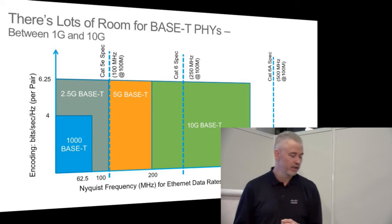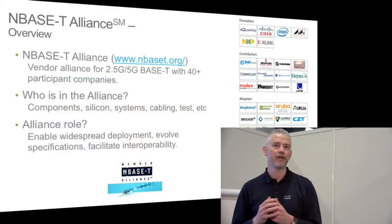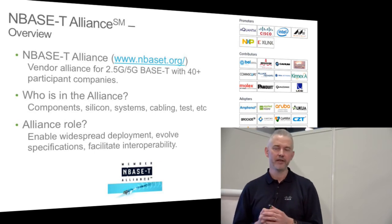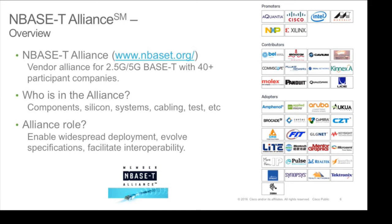Basically, I take the signaling techniques from 10G Base-T, clean them up, slow them down, and push that signaling at a faster rate down the existing cabling plant. The NBase-T Alliance is a vendor alliance of which I'm chair. We have a specification — not a standard, because we're not a standards organization. Promoter companies include Cisco, Aquantia, Intel, Marvell, NXP, and Xilinx — the key leaders on the board. Contributor companies work in our technical and marketing working groups, and we have many adopters building products based on the spec. We include components, silicon, systems, cabling, and test — the whole ecosystem. Our fundamental role is to enable widespread deployments, evolve our specifications, and facilitate interoperability. Without interop, we have no story.